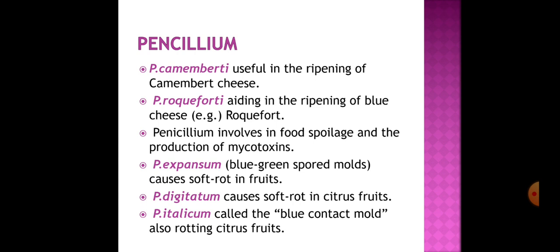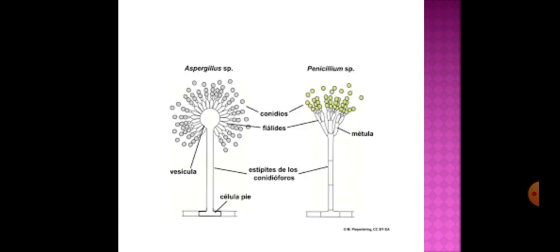Penicillium expansum causes soft rot in most fruits. Penicillium digitatum causes soft rot in citrus fruits, and Penicillium italicum, also known as blue contact mold, is known for rotting citrus fruits. Students often confuse the structures of Aspergillus and Penicillium. The difference is that in Aspergillus the vesicle is not branched, whereas in Penicillium the vesicle is branched to form metulae.